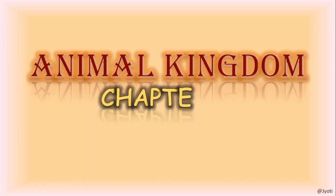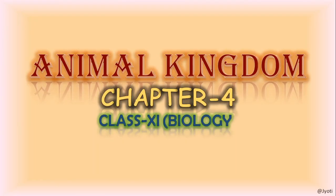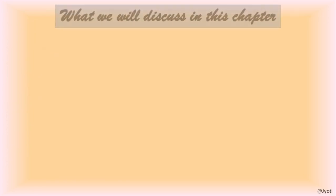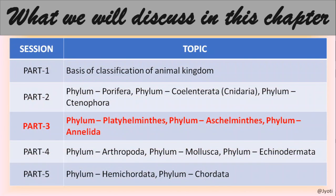Welcome everybody. We are discussing Chapter 4, Animal Kingdom, Class 11th Biology. So far we have discussed the basis of classification of Animal Kingdom, Phylum Porifera, Phylum Coelenterata, and Phylum Ctenophora. Today, in the 3rd session of this chapter, we will discuss Phylum Platyhelminthes, Phylum Aschelminthes, and Phylum Annelida.